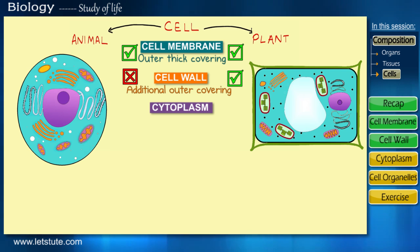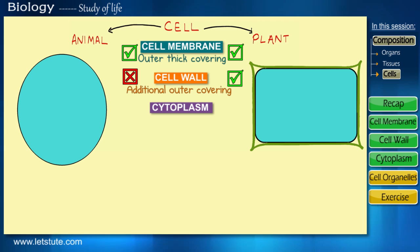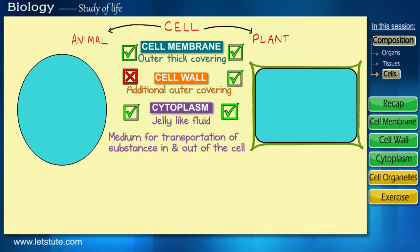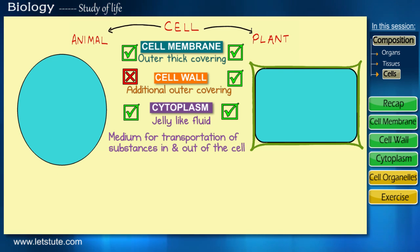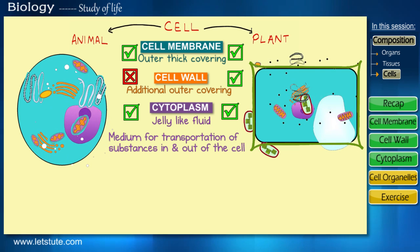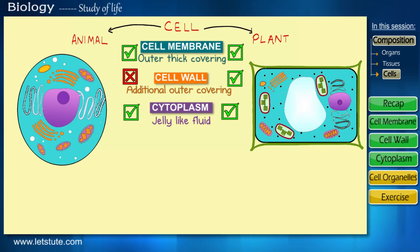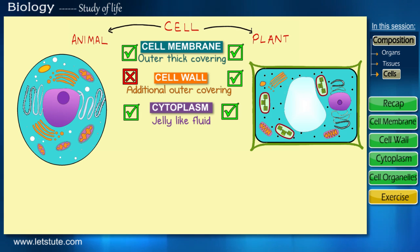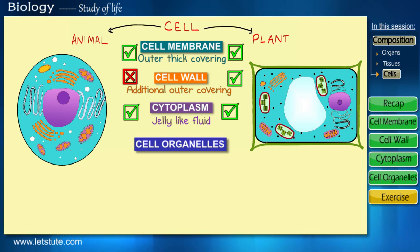Coming to the third one — that is cytoplasm. Inside the cell membrane there is a jelly-like fluid which is present in both types of cells. The function of this fluid is that it acts as a medium for transportation of substances in and out of the cell. Cytoplasm not only helps with transportation but it also helps to hold various organs of a cell. Just as a human body is made up of various types of organs, similarly a cell has different organs to perform different functions — but we call them cell organelles. These organelles are found to be free-floating structures in the cytoplasm.